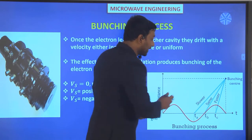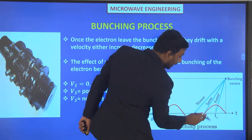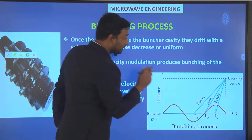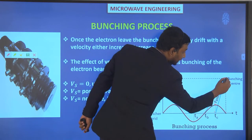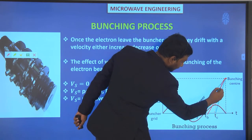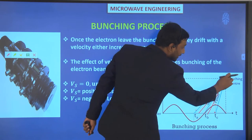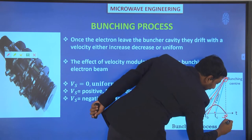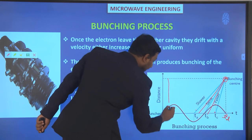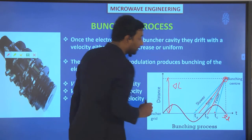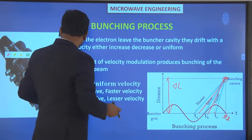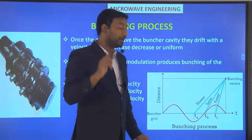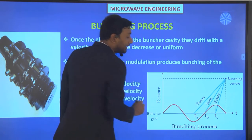All electrons — whether passing through faster, same, or slower velocity — form a bunch point. We consider only three electrons here: one at the maximum point. All electrons reach this particular point at some instant of time Td, covering a distance ΔL. So ΔL is the distance all electrons cover to reach the bunching center.